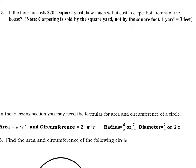Our next problem is a continuation of the previous one. It says that the flooring costs $20 a square yard, not square foot. How much will it cost to carpet both rooms of the house? Remember, one yard is 3 feet. So we currently are working with 292.5 square feet.